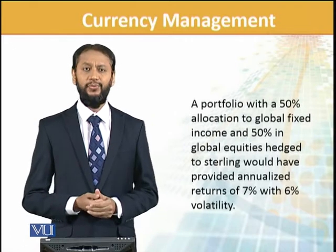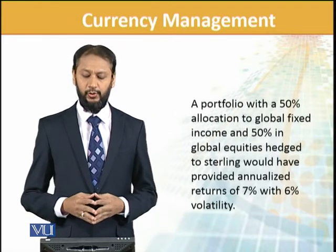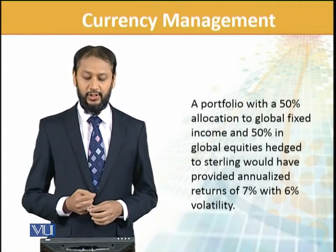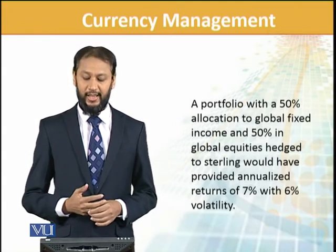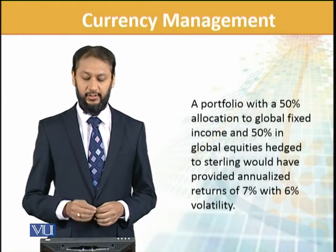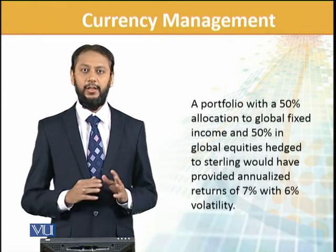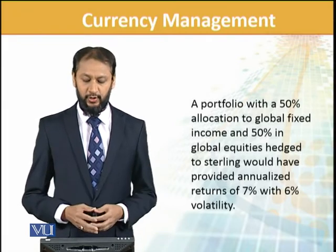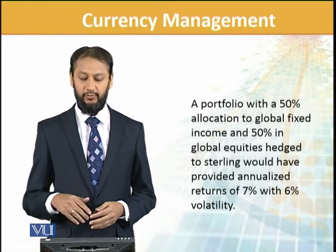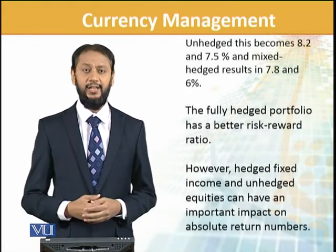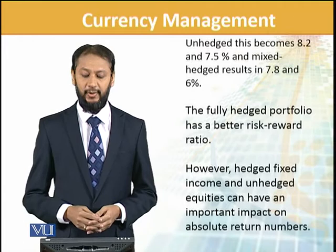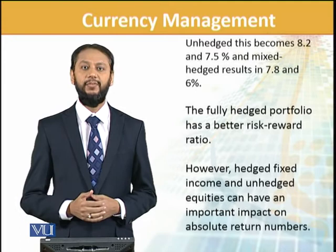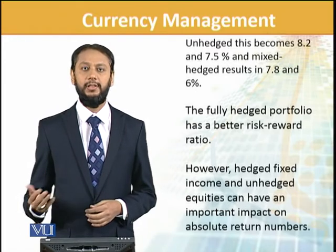A portfolio with 50% allocation to global fixed income and 50% in global equity, hedged to sterling, would have provided an annualized return of 7% with 6% volatility — fully hedged. In contrast, unhedged, this becomes 8.2% volatility and 7.5% return, meaning there is a significant increase in risk.